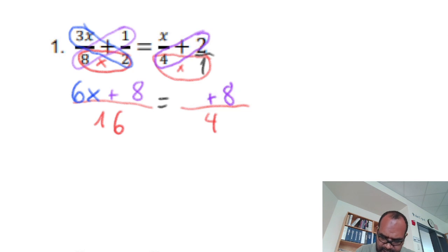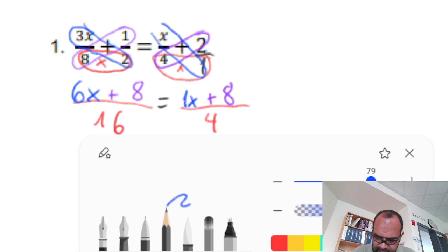The second diagonal, let's do it blue. It is x times 1. It is 1x. Great. It is done. Now, what we are supposed to do? Cross multiply again to solve this guy.